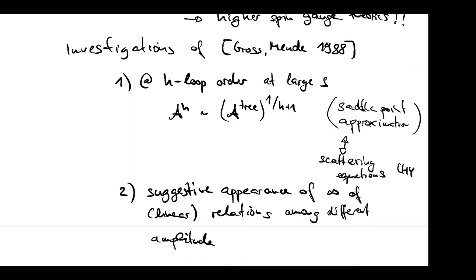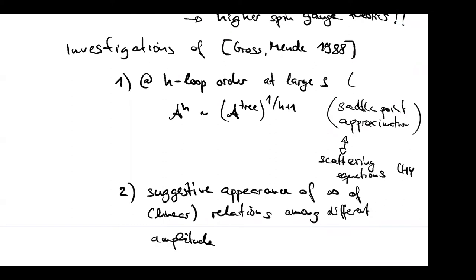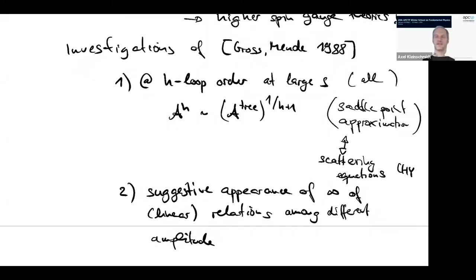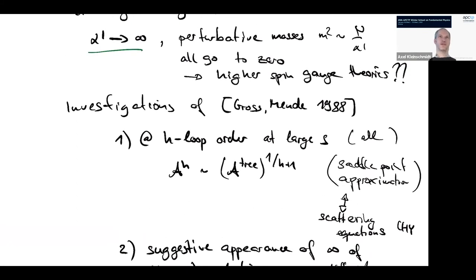Question: When you are considering this high energy limit, are you considering the Regge limit or constant angle high energy scattering? We know that in tree level scattering amplitude, the behavior differs between the Regge limit and constant angle high energy scattering. Answer: Here I'm considering the limit where I'm taking all the Mandelstam variables large at the same time. When talking about hard scattering or Regge limit, one sends S to be large keeping T fixed or S/T fixed. Here I'm just sending all of them large — it's mathematically well-defined by sending alpha prime to infinity, which scales all of them at the same time. It's not the hard scattering.